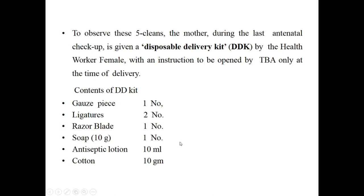To observe these five C's, the health department provides the mother with a kit just before delivery — we call it the DDK, the Disposable Delivery Kit. Its contents comprise a coarse piece, ligature, razor blade, soap, antiseptic lotion, and cotton. All these contents are to be placed in a plastic bag, sealed and sterilized by gamma radiation.